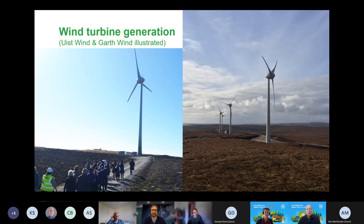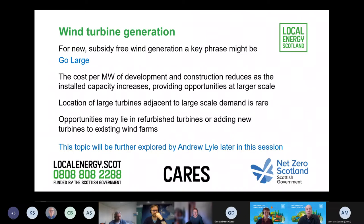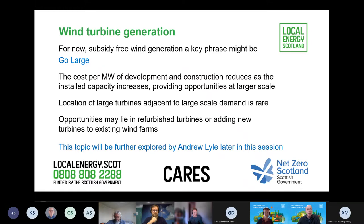Wind turbine generation — we'll talk about these in more depth, primarily from Andy Lyle. Looking at examples like US Wind and Garth Wind, it's the Garth Wind scale on the right that we need to be looking at in future. A key phrase for onshore wind is 'go large.' There's an economy of scale: if you can get bigger turbines and more than one turbine, costs come down, and at certain scales you can sell power at wholesale price and the project is still viable, though these tend to be quite large projects.